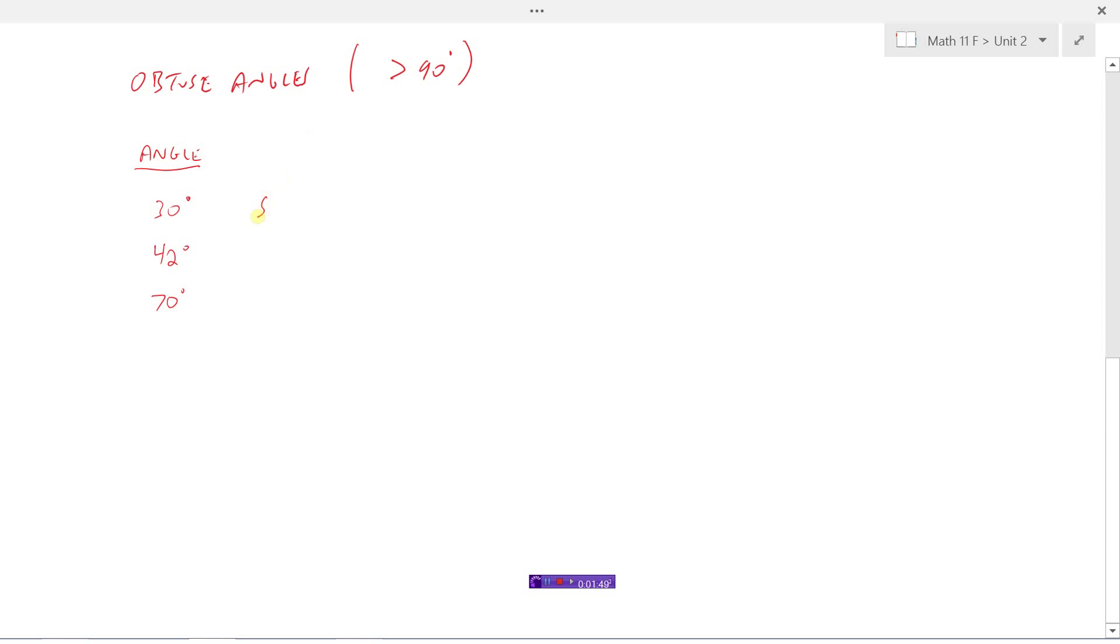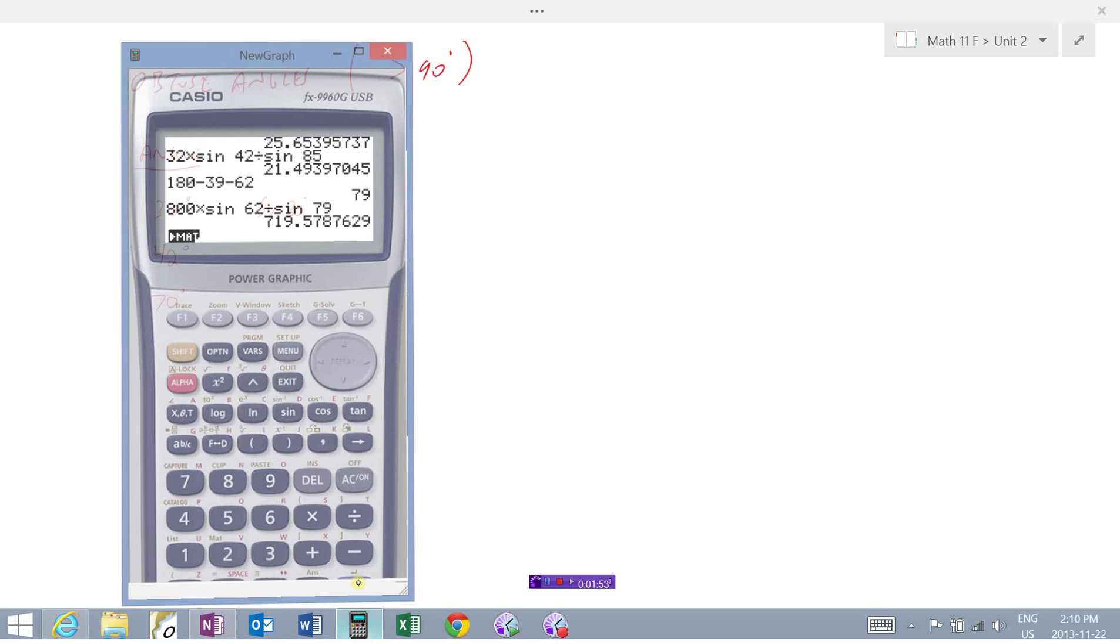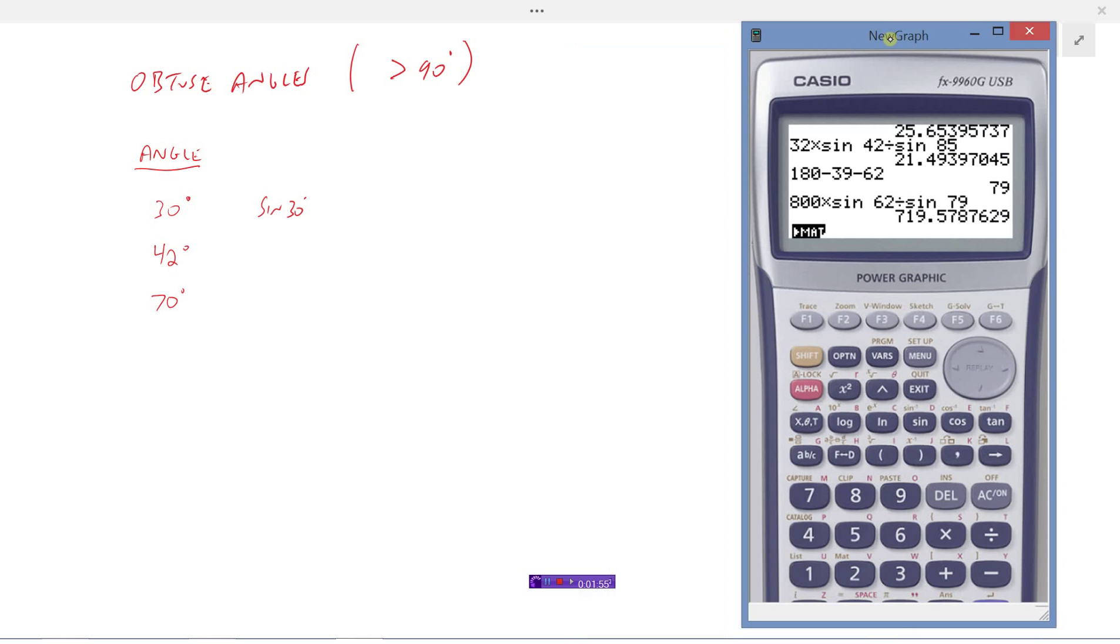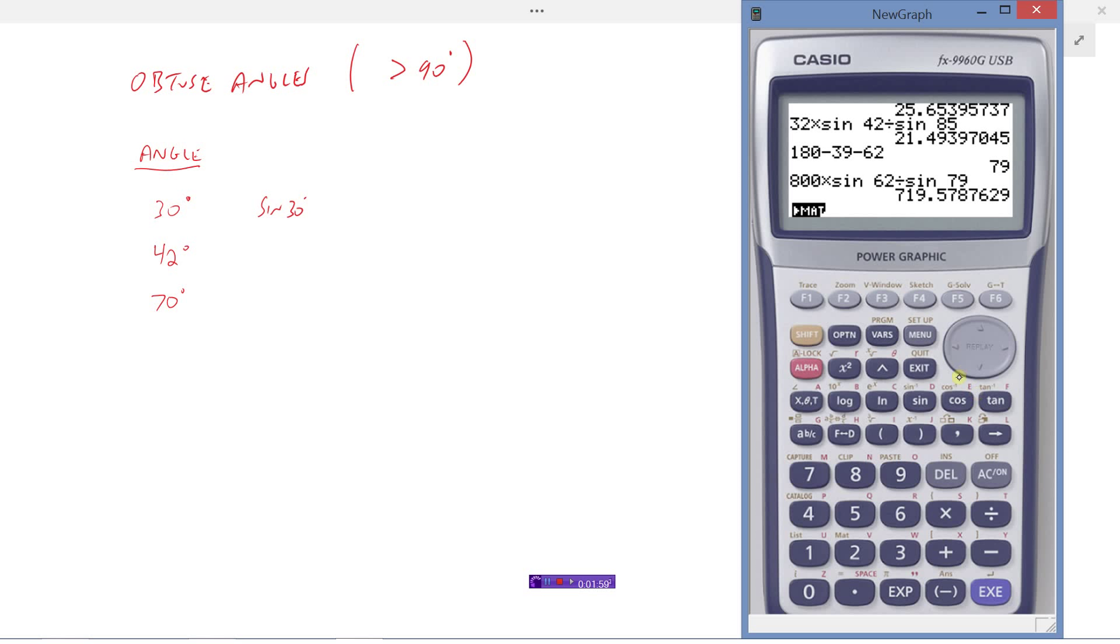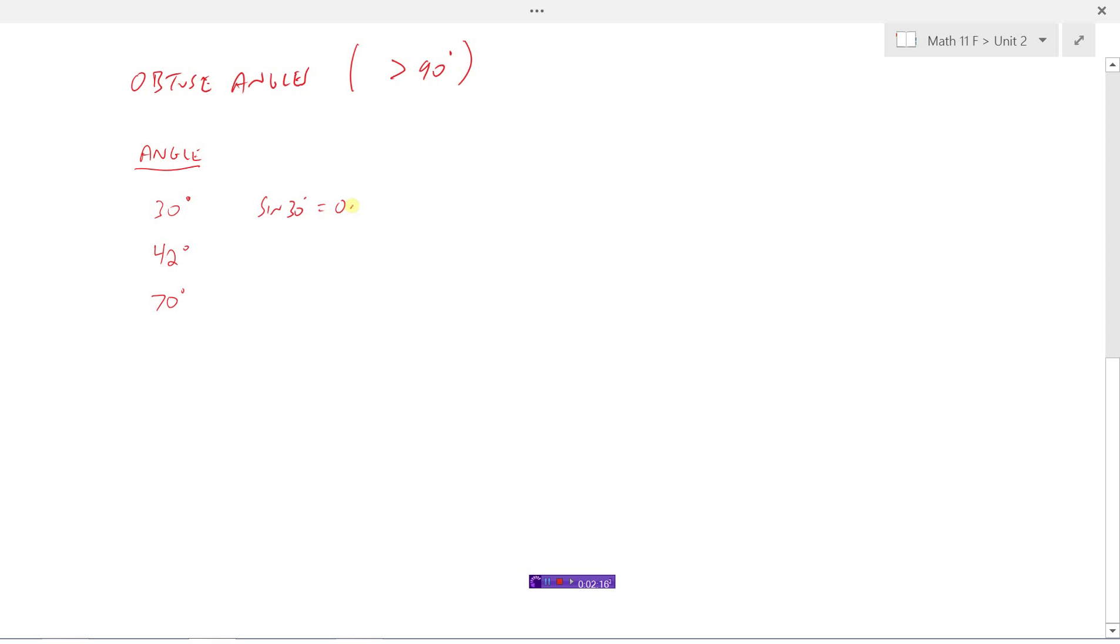Let's try to go to the calculator here and find out what the sine of 30 degrees is. Let's clear this thing off. Make sure that we are in degrees. Good. I'm going to punch in the sine of 30 degrees. This is going to give me the opposite over hypotenuse ratio of 0.5. So sine of 30 equals 0.5.